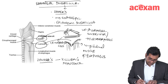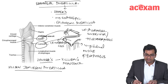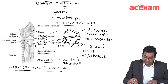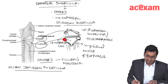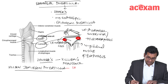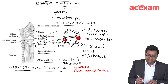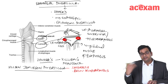There is another diverticula — the Killian-Jamieson diverticula, which is seen here. I will mark it in red. This is present laterally and below cricopharyngeus. So the Killian-Jamieson diverticula is present laterally and below cricopharyngeus, whereas Zenker's diverticulum is present centrally and above cricopharyngeus.